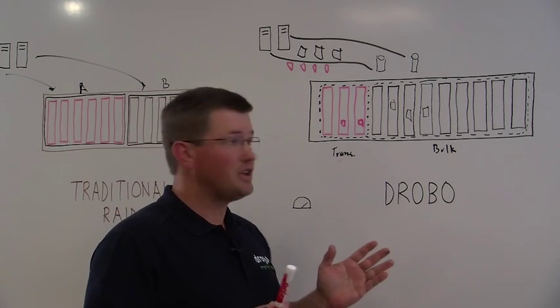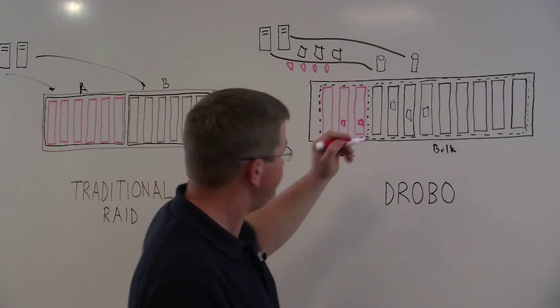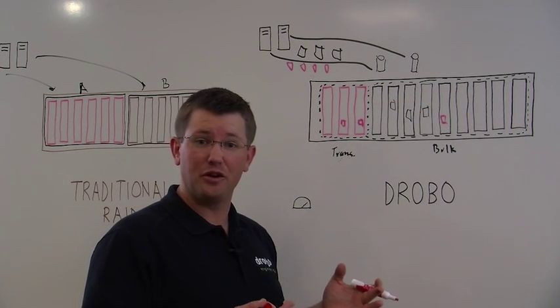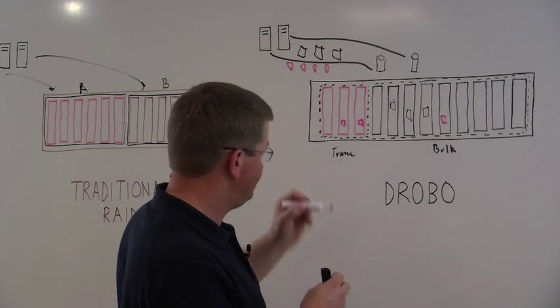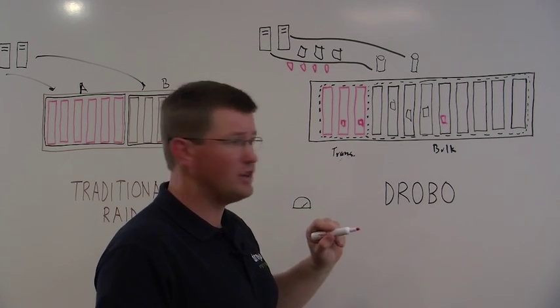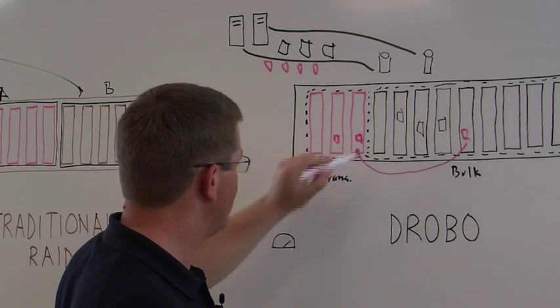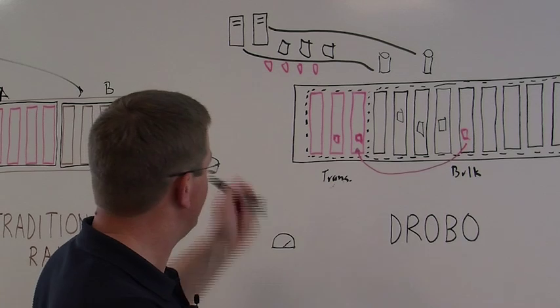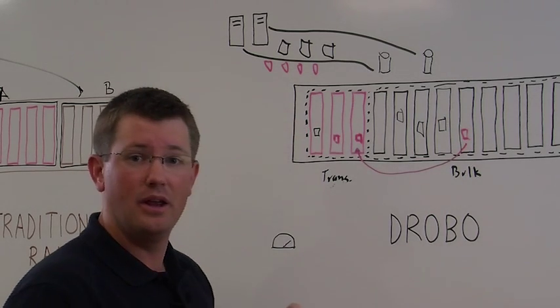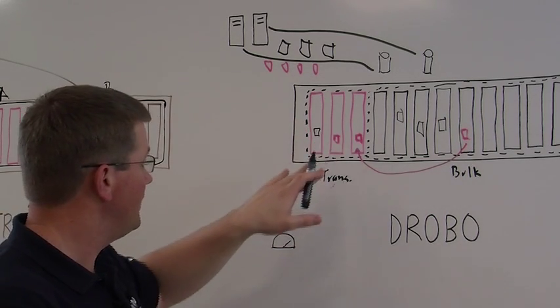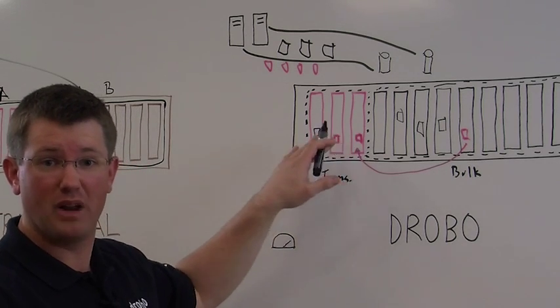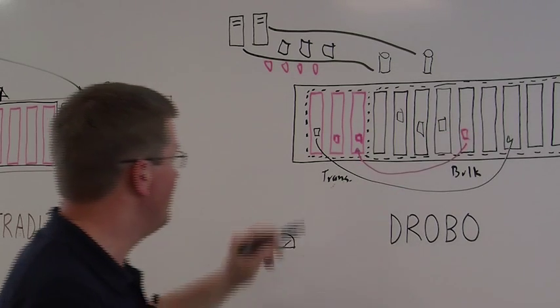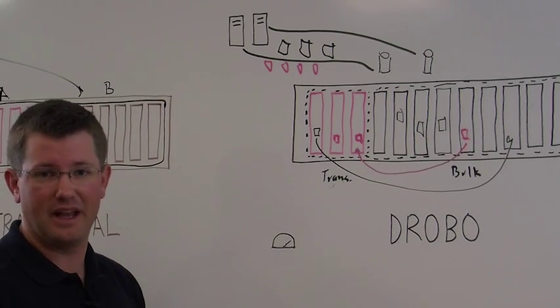But things may change over time. You may have data that lives on the bulk tier that may start being accessed very frequently or get hot. That hot data, if it exists in the bulk tier, eventually will be migrated over into the transactional tier. The same happens for data that becomes cold. If you have data on the transactional tier that's rarely accessed, there's no reason to take up capacity on the often smaller but higher performance drives. So that data will be migrated off into the bulk tier to make room for more transactional data to be accelerated.